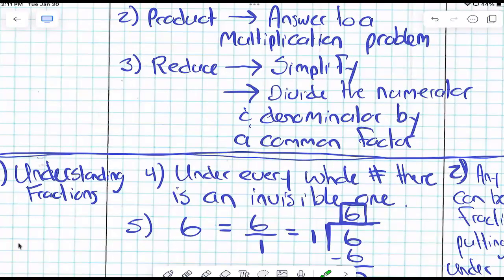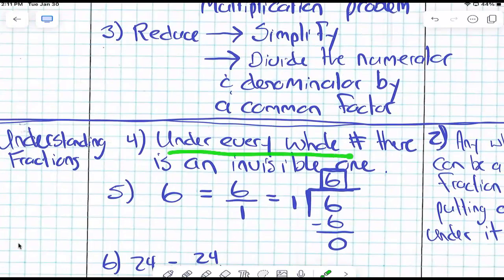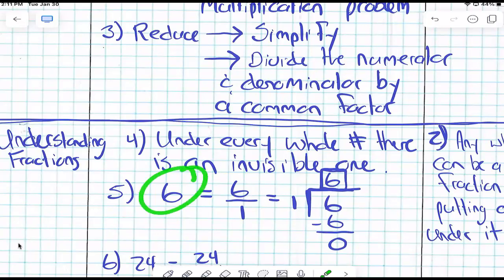All right, here we go. Understanding fractions. Do you know that under every single whole number, there's an invisible one? So if you have the number 6, you could actually write it as a fraction as 6 over 1. Everybody knows that? And here's the proof of why 6 over 1 goes back to 6, right?